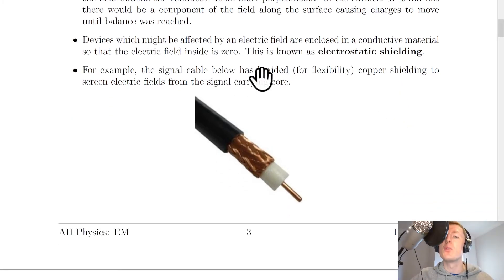For example, the signal cable below has braided, for flexibility, copper shielding to screen electric fields from the signal carrying core. You can see the braided copper shielding here and that's going to screen its signals to block out any interference when you're carrying data or signals through wires.